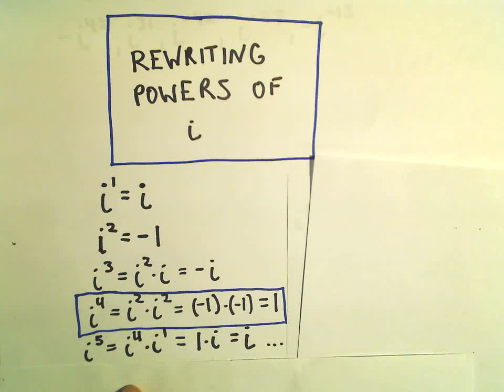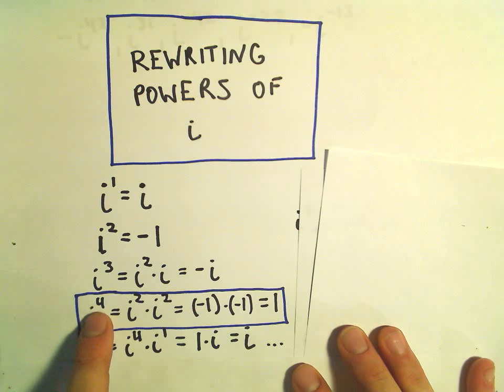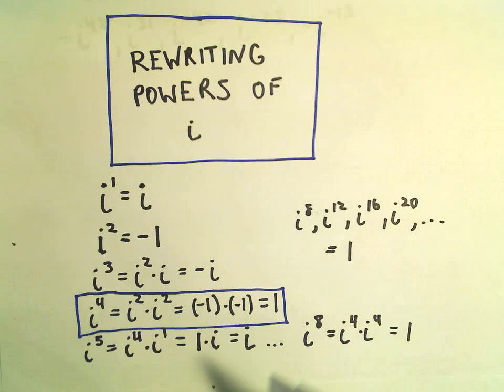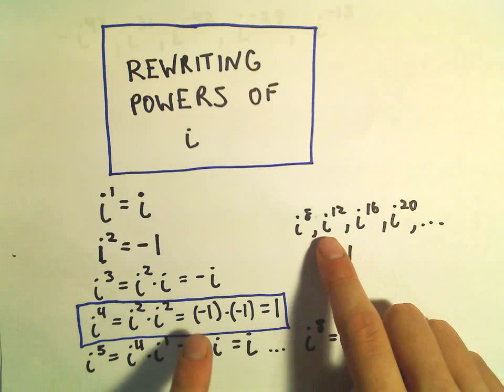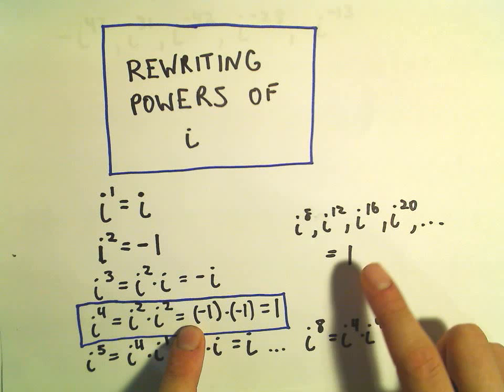So again, one of the things that's important is if the exponent is a multiple of 4. So for example, i to the eighth, or i to the twelfth or to the sixteenth or to the twentieth. If the exponent is a multiple of 4, that's always going to equal the number 1.